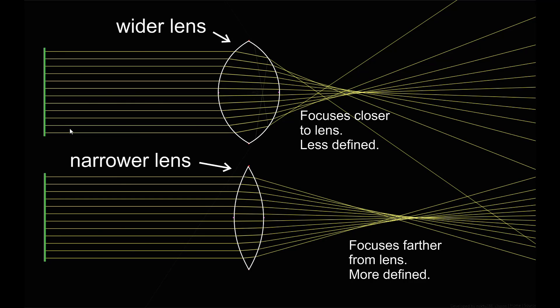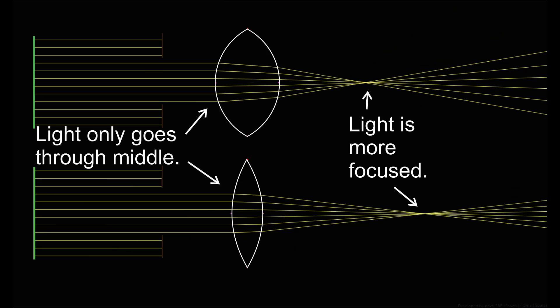Ideally, we would like all of these beams to cross at the exact same point. If we block some of the light going through the lens and only allow the beams to go through the more central part of the lens, then we get a more finely focused point. This is fine if we're looking at a really bright object, but if we're looking at a more dim object, we really want all the light we can get.